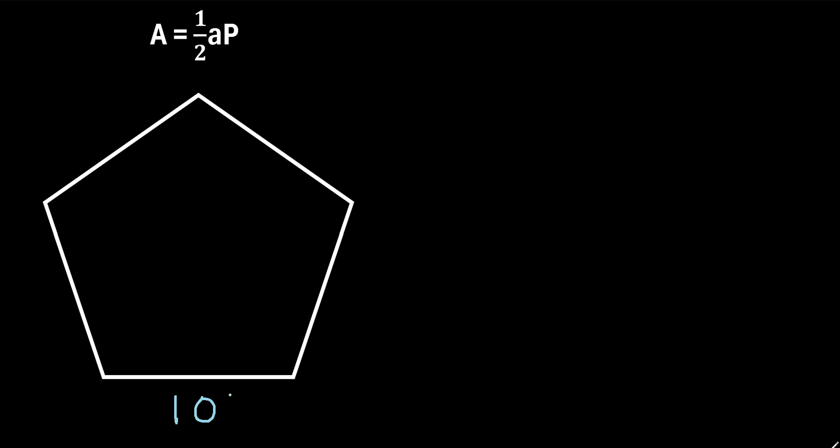So it's pretty easy to find the perimeter if we're given the side length here. So a pentagon has five sides, so if this side is 10, the perimeter must be 10 times five, which is just 50. So that's pretty easy to find.